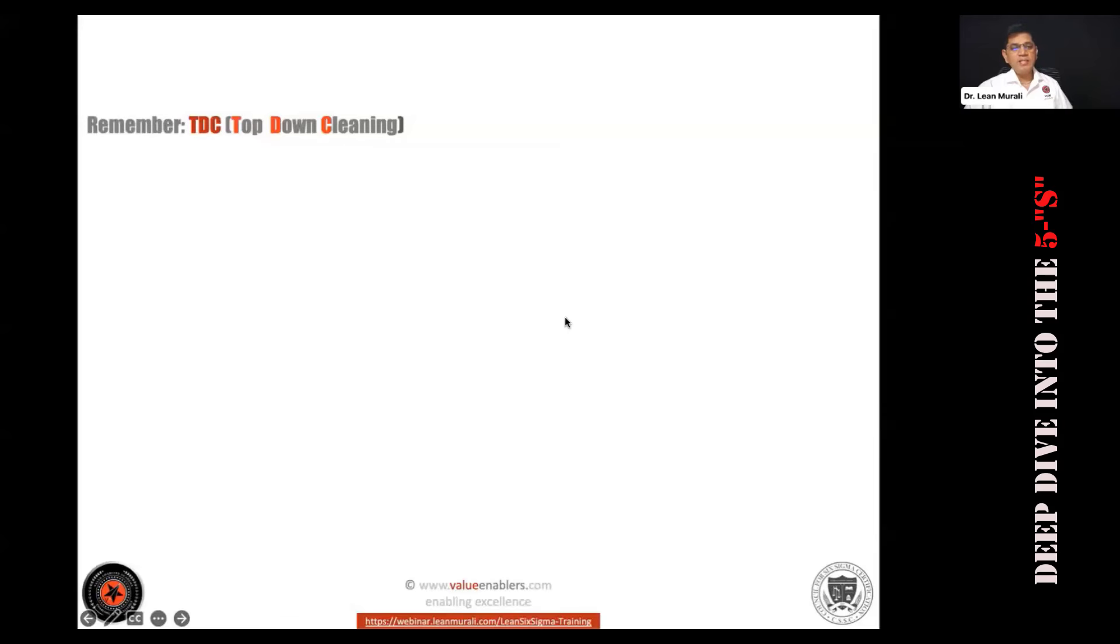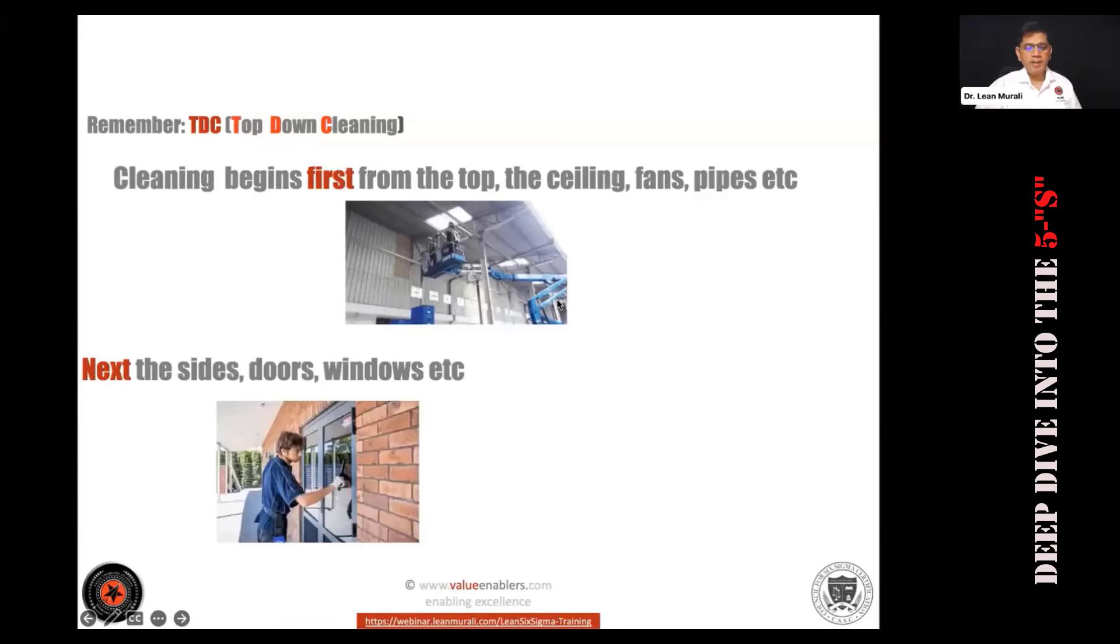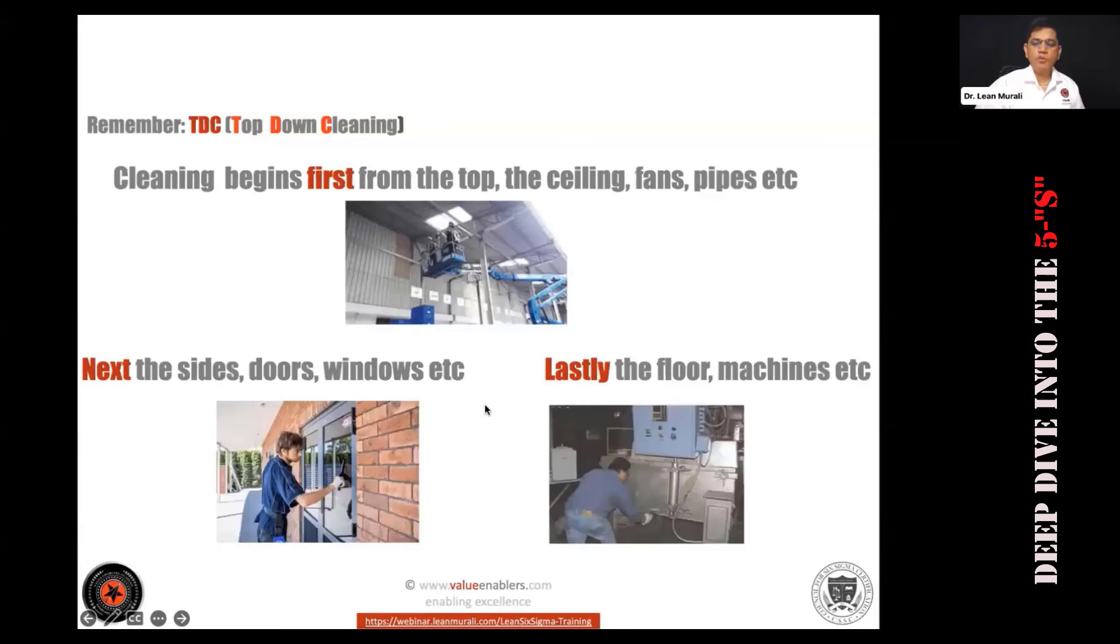So cleaning becomes from the top, like ceilings, fans, pipes, etc. on the top and then sideways you clean it, and finally you clean the bottom floor so that you avoid cleaning again and again. And every day cleaning for the workplace is very important. Build pride in work areas. Identify sources of contamination and clean them. Have a cleaning kit which can reach that sources of area where I can clean. The best cleaning is no cleaning. Cleaning is form of inspection. Cleaning with a meaning. All of you type CWM in the chat box - cleaning with meaning.